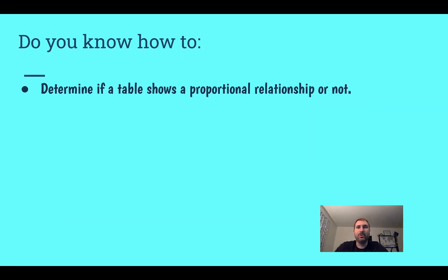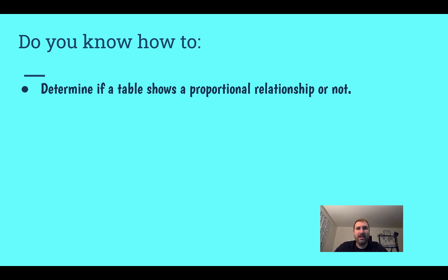After this lesson, do you now know how to determine if a table shows a proportional relationship or not? If you're not confident, go back and look at the examples — the one that shows a proportional relationship and the next one where it is not — and focus on how you can tell the difference between the two. That's the end of Lesson 7, where we were determining if tables show a proportional relationship or not.